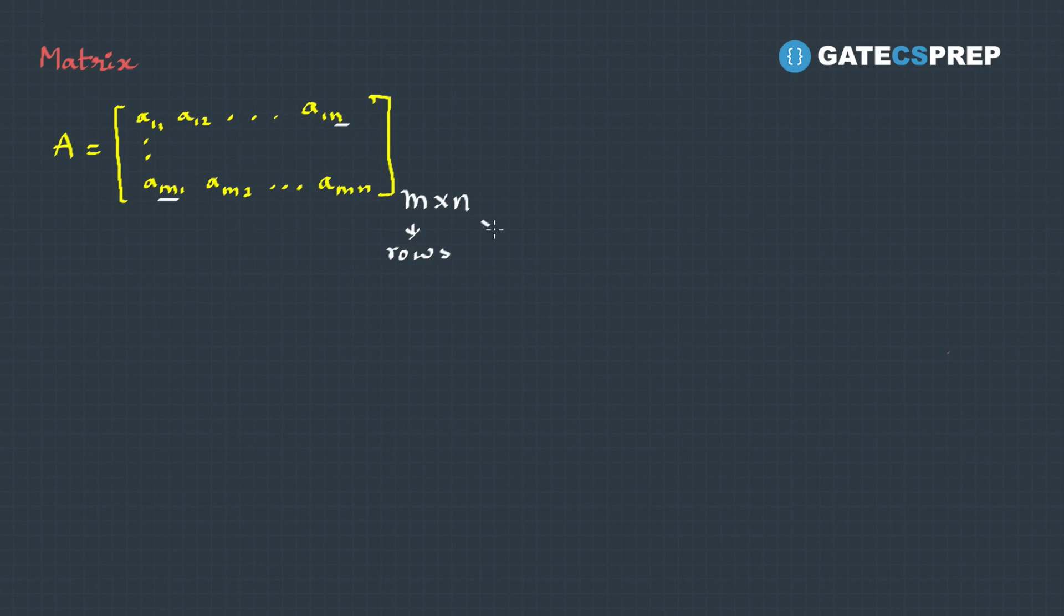Generally, we use a capital letter to represent the matrix and small letters to represent the elements. If I have an element a with position ij, here i represents the row and j represents the column position.